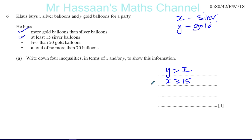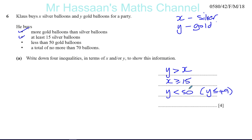Then you have less than 50 gold balloons. Y is gold balloons, and there must be less than 50. Less than 50 means you can't have 50, but you can have less. We can also write this as Y ≤ 49, because balloons come in whole numbers. So if there are less than 50, the highest it can be is 49. Both Y < 50 and Y ≤ 49 are acceptable. If it weren't something that comes in whole numbers, you should write Y < 50.